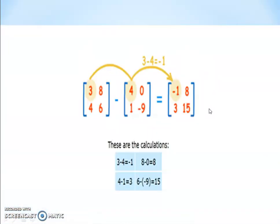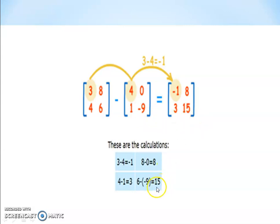Now the subtraction of matrices — same pattern, but the middle sign is negative. We get 3-4=-1, 8-0=8, 4-1=3, and 6-(-9)=15. In subtraction, all the elements of the second matrix have their signs changed: negative becomes positive and positive becomes negative.